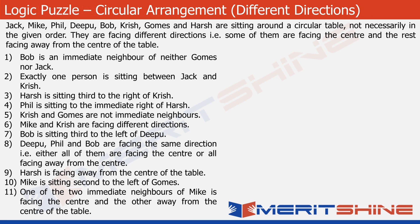This problem is about 8 individuals who are sitting around a circular table. These people are facing different directions while sitting at the table. While some of them are facing the centre of the table, some others are facing exactly the opposite direction — their backs are towards the centre. My advice would be to solve this question on your own first, then proceed to the solution.